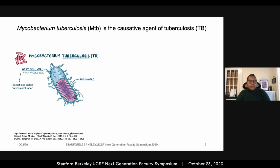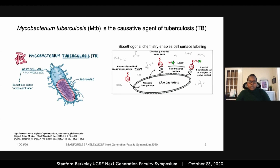As a result, studying the biochemistry of the MTB cell surface is a rich area of research, including tool development to study the mycomembrane. By the time I joined the Bertozzi group, several molecules had been developed to probe the mycomembrane using bioorthogonal chemistry. The idea is that we take a molecule that is a natural component of the mycomembrane, say a sugar or a lipid.